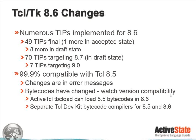To put that in perspective, there are 70 other TIPs targeting 8.7 — anything compatible with the 8.x series beyond the next release. Seven TIPs specifically target 9.0 because they recommend features that would break compatibility with 8.x. 8.6 itself is 99.9% compatible with 8.5. There are a few changes: changes in error messages, and bytecodes have also changed. For those who use a bytecode compiler such as the one in TCL DevKit, TBC load will load an 8.5 bytecode into 8.6, but not vice versa. There are separate bytecode compilers for 8.5 and 8.6 in the TCL DevKit.